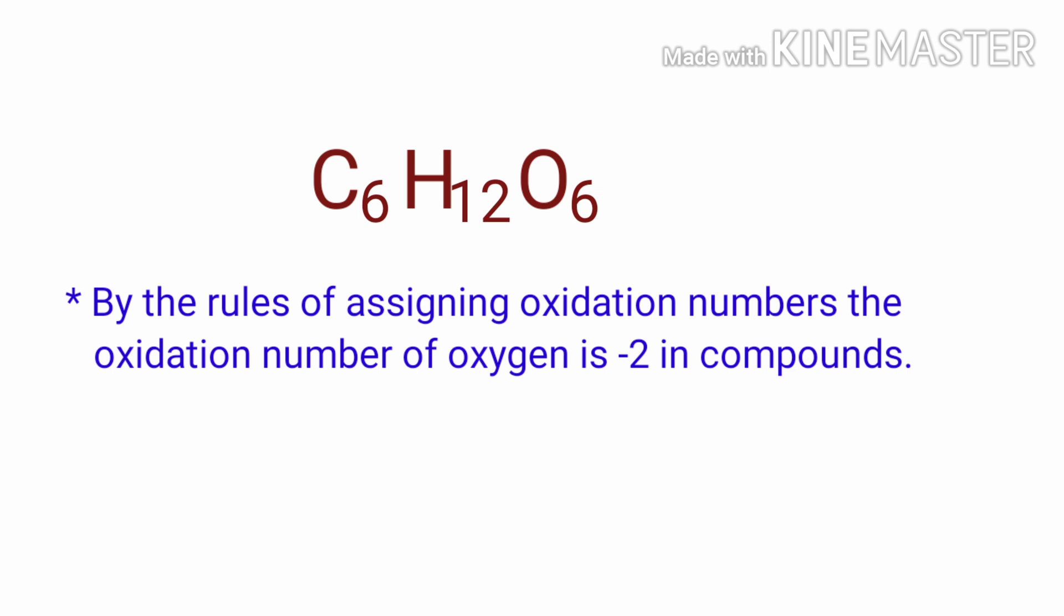By the rules of assigning oxidation numbers, the oxidation number of oxygen is -2 in compounds. We can write the oxidation number of the element above its symbol and the total number of the oxidation number of the atoms below its symbol.